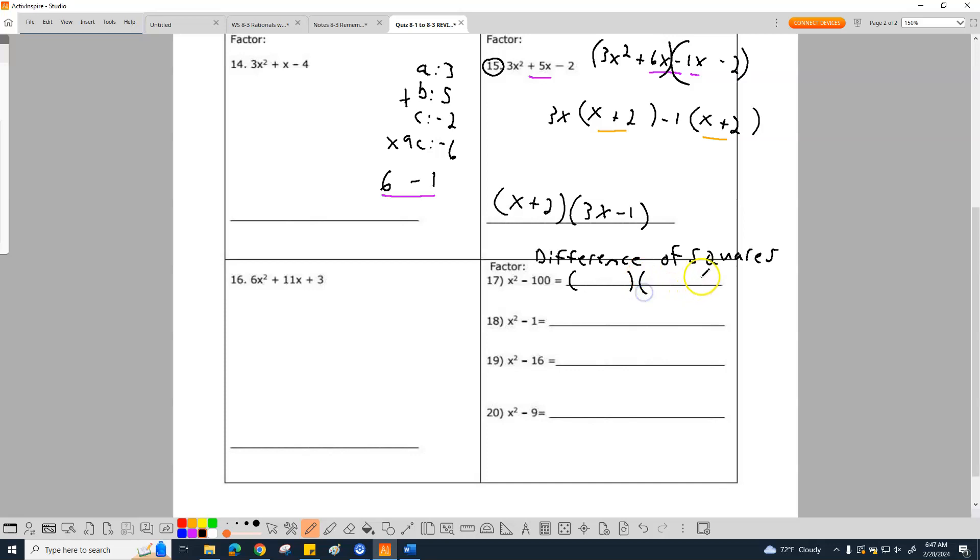The first one, the perfect square of the first one is x. Then I'm going to have a plus, I'm going to have a minus. And the square root of 100 is 10. And that's literally the answer on how to do these.